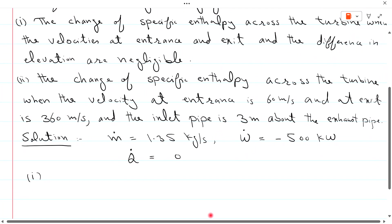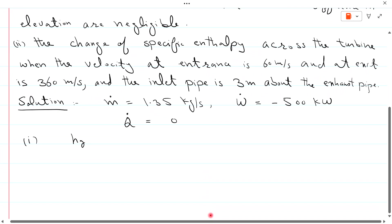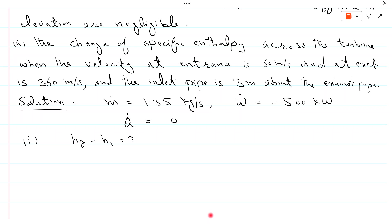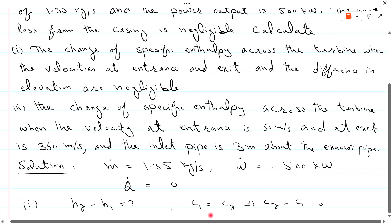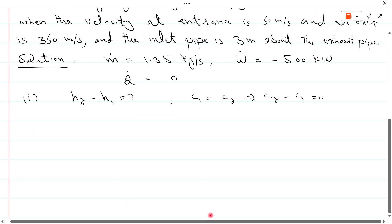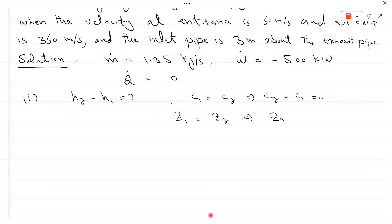Part 1: Find h2 minus h1 — the change of specific enthalpy across the turbine — when the change in velocity is negligible, meaning C1 equals C2, so C2 minus C1 equals 0. The difference in elevation is also negligible, meaning Z1 equals Z2, so Z2 minus Z1 equals 0.